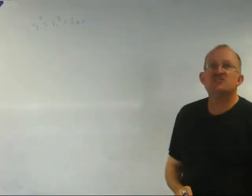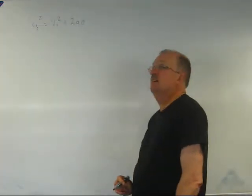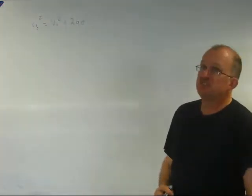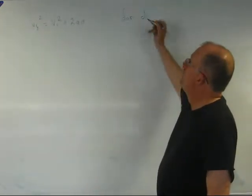Let's take a kinematic equation: Vf squared equals Vi squared plus 2ad. We're going to rearrange it for d.